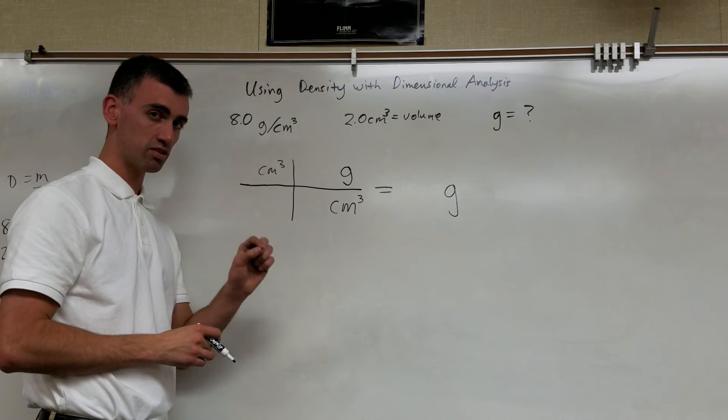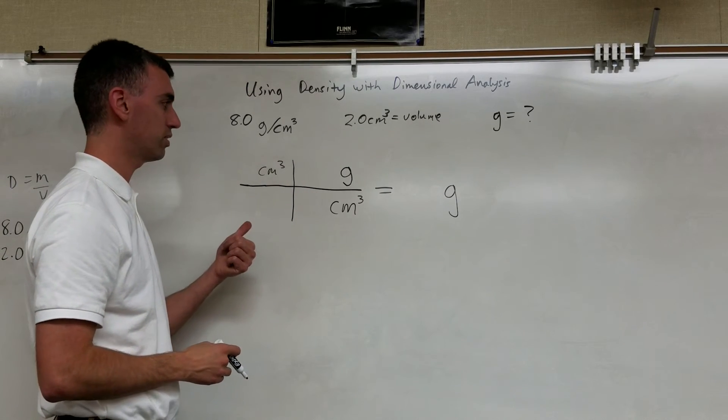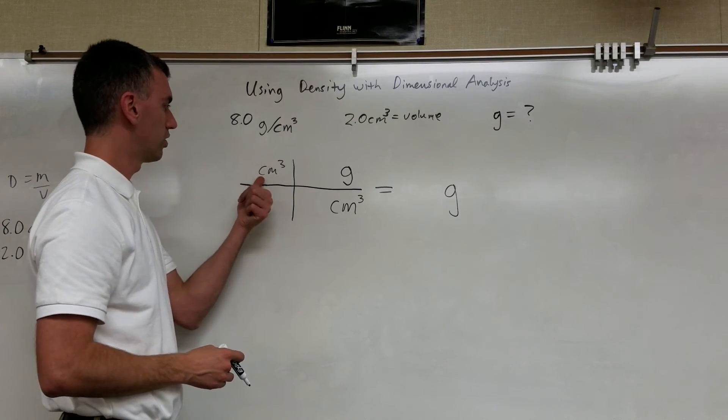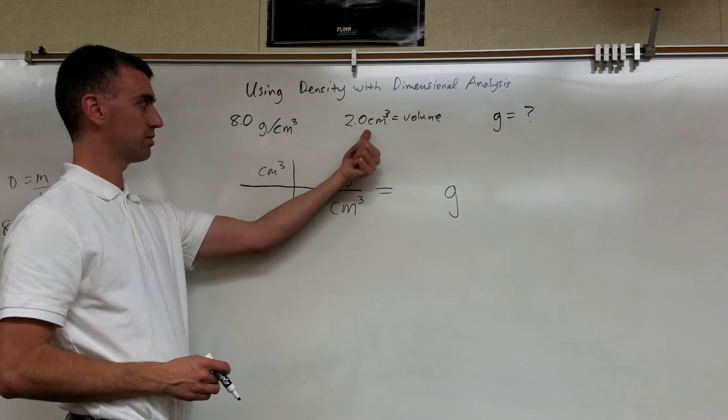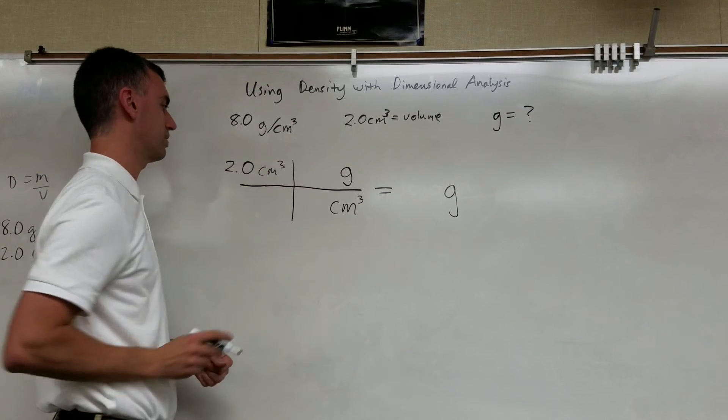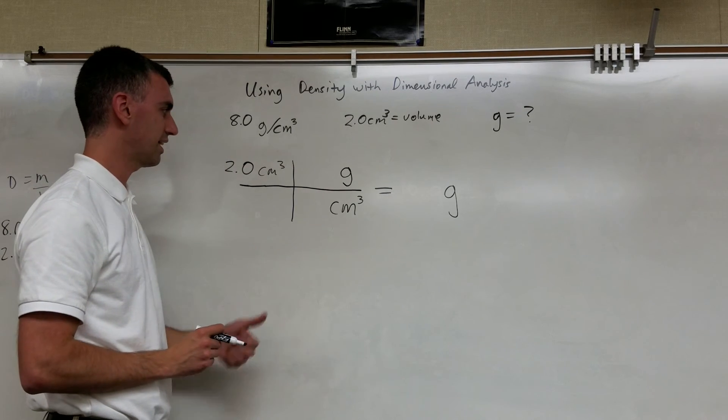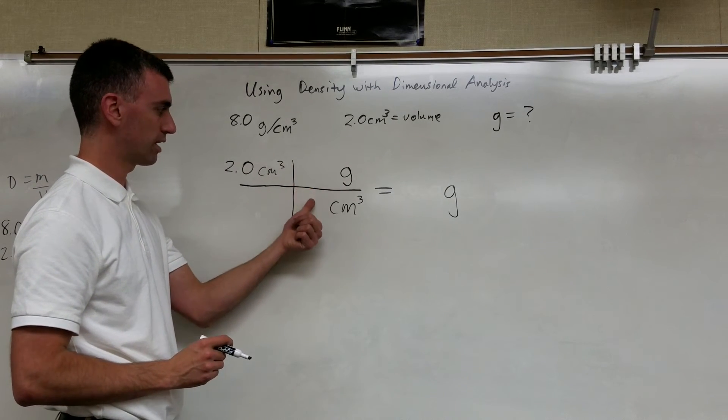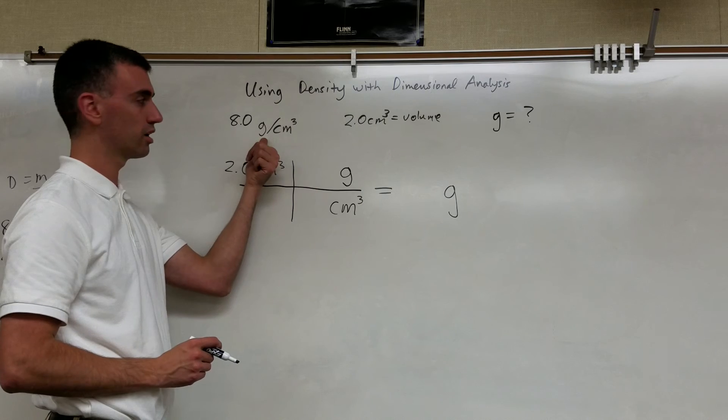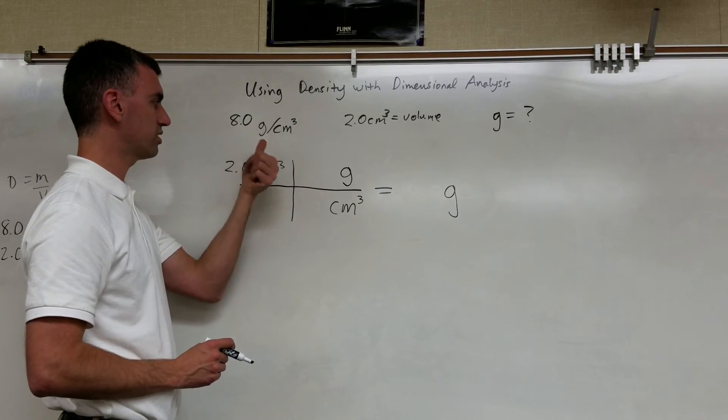Now that the units are set up correctly, I can go ahead and plug the numbers in. So centimeters cubed, the one that has units of centimeters cubed, this number I put 2.0 in. And then here, what involves units of grams per cubic centimeter? Right here.